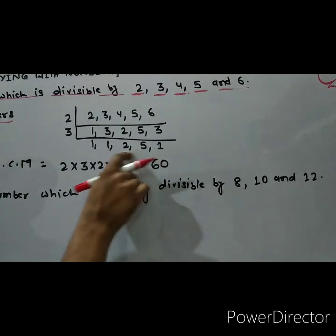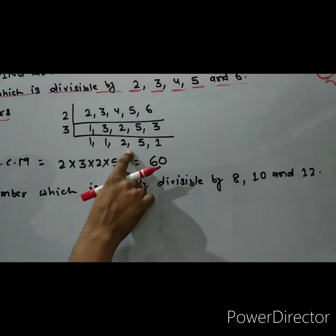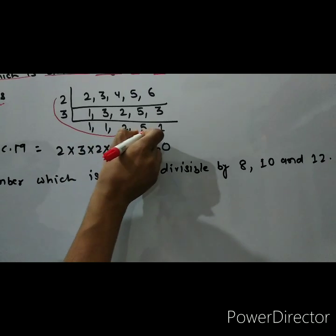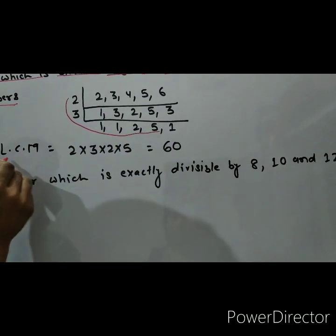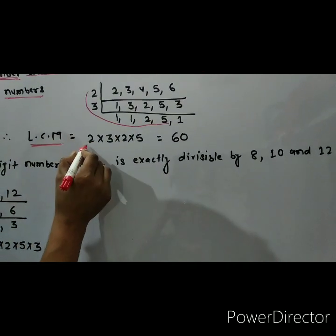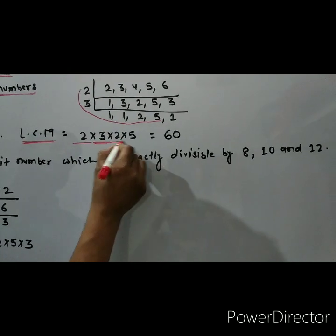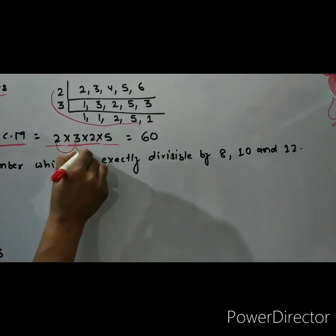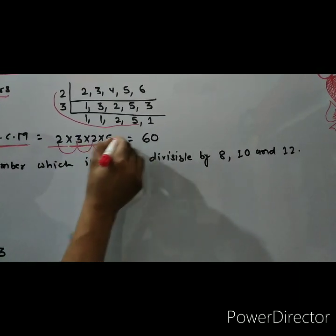Now here 2 and 5 are not divisible by any same number or same table. So now we are multiplying this one: 2 into 3 into 2 into 5. Therefore LCM is equal to 2 into 3 into 2 into 5. So it is 2 threes are 6, 6 twos are 12 and 12 fives are 60.